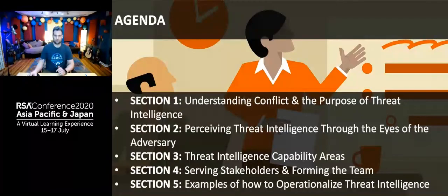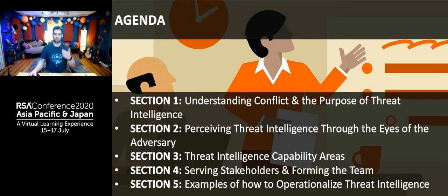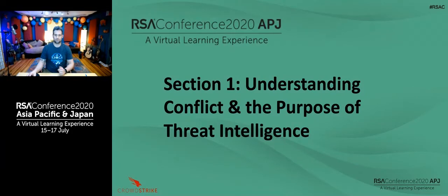Here's the agenda of what we're going to be reviewing today. There'll be five sections. We're going to start off at a high level with conceptual content where we understand conflict, then slowly dive deeper. We'll talk about how to perceive threat intelligence through the eyes of the adversary, understand threat intelligence capability areas, how to serve various stakeholders and form the team, as well as examples of how to operationalize threat intelligence.